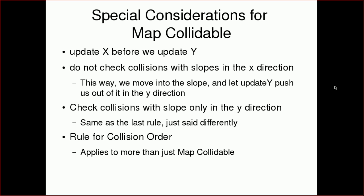Now for special considerations — slopes can be kind of a problem. When talking about map collidables, we want to update x before we update y. We don't want to check collisions with slopes in the x direction; instead, we move into the slope and let our update y push us out of the slope. For map collidables like Power Doritos and our player, we only check collisions with slopes in the y direction.